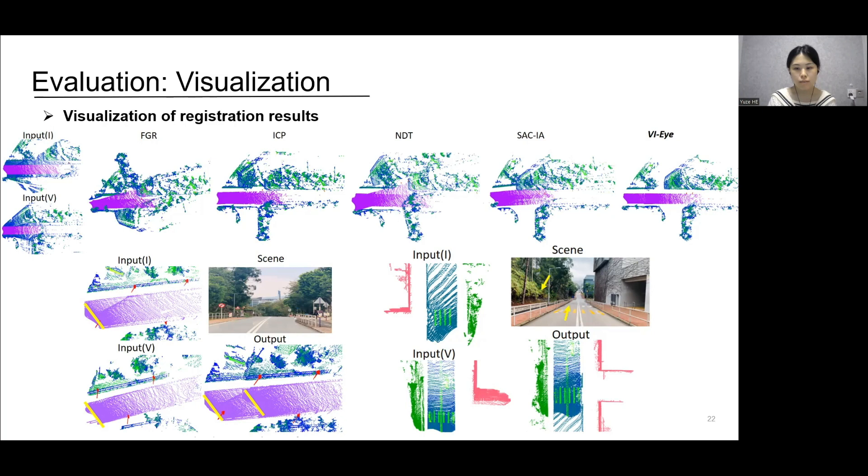Here we show some registration results. The figure above shows a bird-eye view of the registration results in the campus scene. We can see that VII achieves better registration results. The bottom left figure shows an example of the easy group. The bottom right figure shows an example of the hard group, where there is a large rotation and a small overlap between the LIDARs on vehicle and infrastructure.